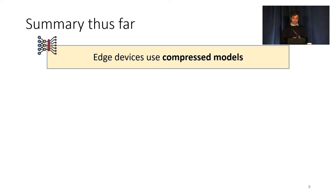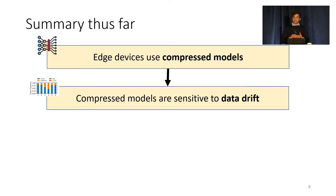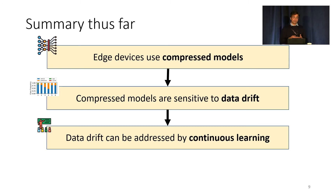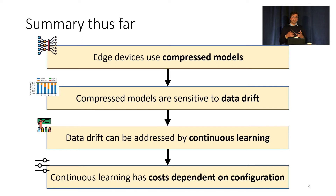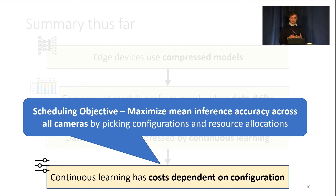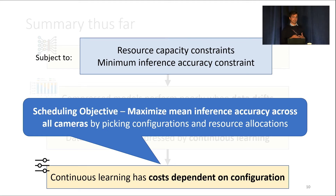To summarize thus far: edge devices use compressed models for inference at the edge; these compressed models are subject to data drift, which reduces inference accuracy; and data drift can be addressed using continuous learning, but continuous learning has costs which depend on the chosen configuration. We formulate this as a scheduling problem where the objective is to maximize the mean inference accuracy across all video streams in the current retraining window, subject to a resource capacity constraint and a minimum inference accuracy constraint so that no video stream is starved.